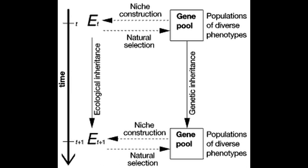Niche construction involves feedback between organisms and their environments, in which the organisms modify the environment, subsequently altering the selective pressures, which in turn will influence the evolution of organisms. Such feedback can be reciprocal, wherein the same species is also affected by the very environmental change it has caused, and/or the environmental change affects other species.